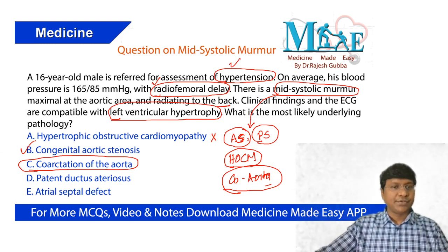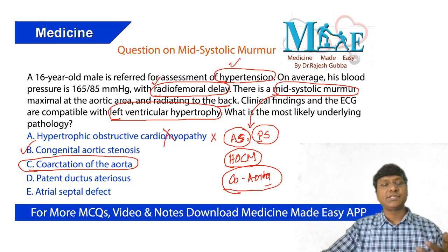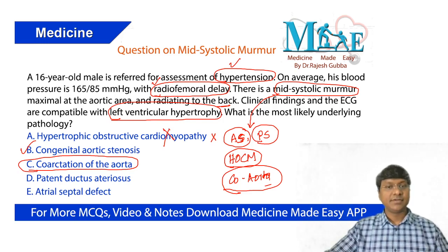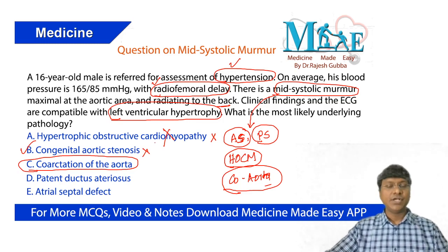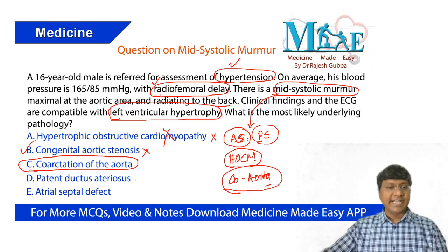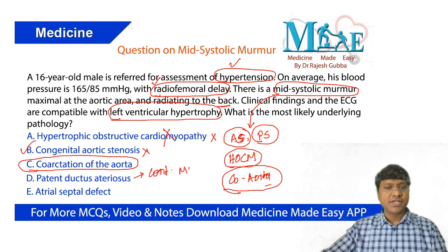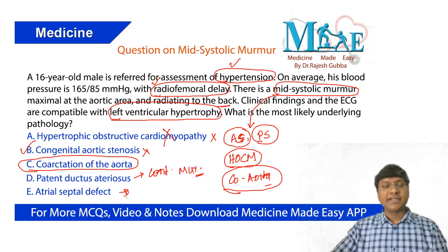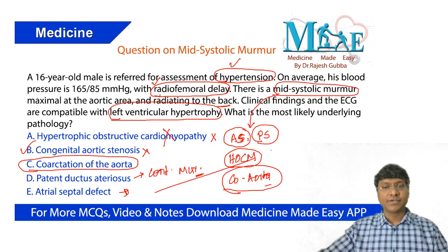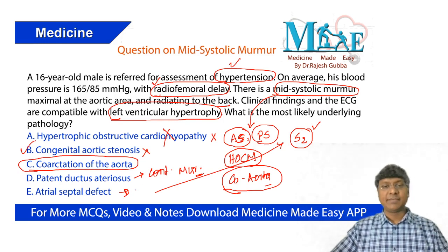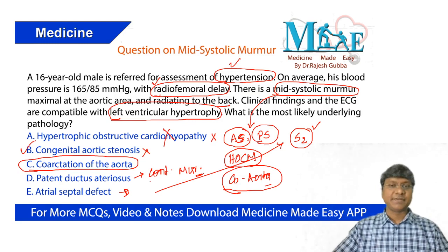Going back to the question: HOCM is completely ruled out — in HOCM the individual will not have hypertension, will not have radiofemoral delay; they can only have ejection systolic murmur and LVH on ECG. Congenital aortic stenosis is also ruled out as hypertension is completely against it. In patent ductus arteriosus, you will have a continuous murmur, not ejection systolic. In atrial septal defect, you will have a functional murmur of pulmonary stenosis and wide fixed split of the second heart sound — and no murmur radiating to the back. So atrial septal defect is also ruled out.